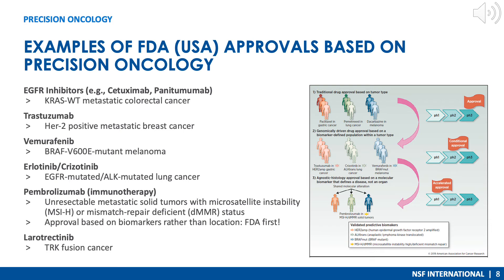Traditionally, drugs are approved based on tumor type. With advances in the last decade, we now have genomically-driven drug approval based on biomarker-defined populations within a tumor type. Examples include vemurafenib approval for melanoma patients with the V600E mutation in the BRAF protein. More recently, we have histology-agnostic approval based on a molecular biomarker that defines a disease, not an organ — for example, pembrolizumab approval in 2017 for patients with high microsatellite instability or mismatch repair-deficient cancer.